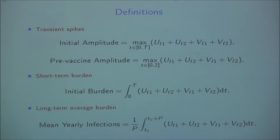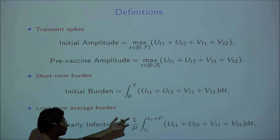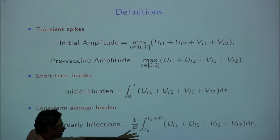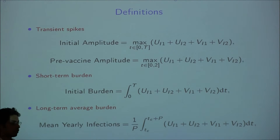For short-term burden, we add up the number of infections over the first T years after vaccine introduction and compare it with the same period under the pre-vaccine scenario. For long-term average burden, we calculate the mean yearly infections by taking the total number of infections over a long period and dividing by that period to get the mean yearly infections.